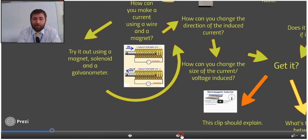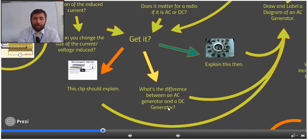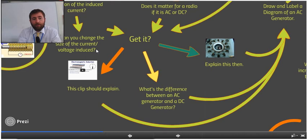Okay, you can change the size of the current induced as well. And you can change the size by having more turns on your solenoid. So many, many more loops of wire. You can also increase the magnetic field and you're going to get a larger voltage as well. And also, if you actually move the magnet or the wire more rapidly, faster, then you're going to get a higher voltage as well.